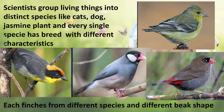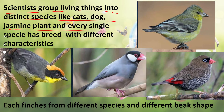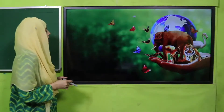Scientists group living things into distinctive species like cats, dogs, and jasmine plants, and every single species has breeds with different characteristics. Even if you look at a single bird — its beak, its color, its feathers, its habitat — they are all different from one another. That is why there is so much variety in living things.